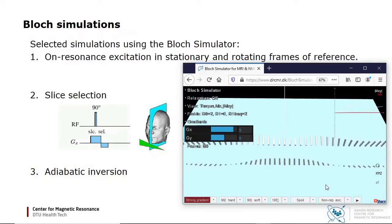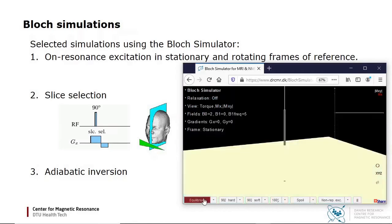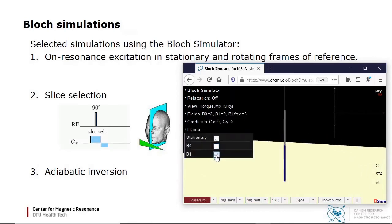To give a better impression of the effective field vector, I will now show so-called adiabatic inversion, used to apply 180 degree pulses fairly independent of the B0 and B1 amplitudes. The idea is to start the RF pulse far from resonance and then do a frequency sweep through resonance. I start in equilibrium and go to the rotating frame.